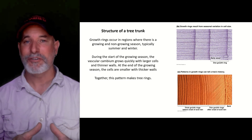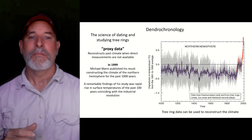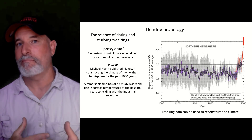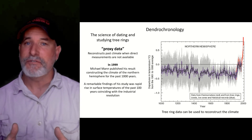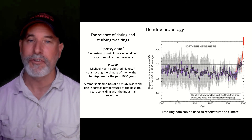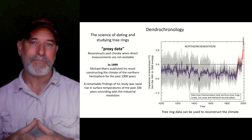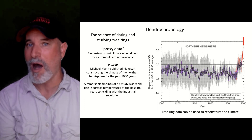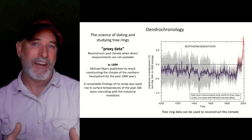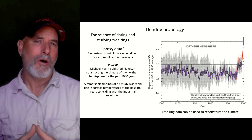Tree rings let us study climate — there's an entire field called dendrochronology, where you can pull tree rings and understand patterns of rainfall and climate in a region. We haven't always had thermometers going back several hundred years, so we use tree rings as proxy data. I call it proxy because I'm not taking temperature with a thermometer — I'm reconstructing past climate of rainfall and temperature using data other than a direct measurement.